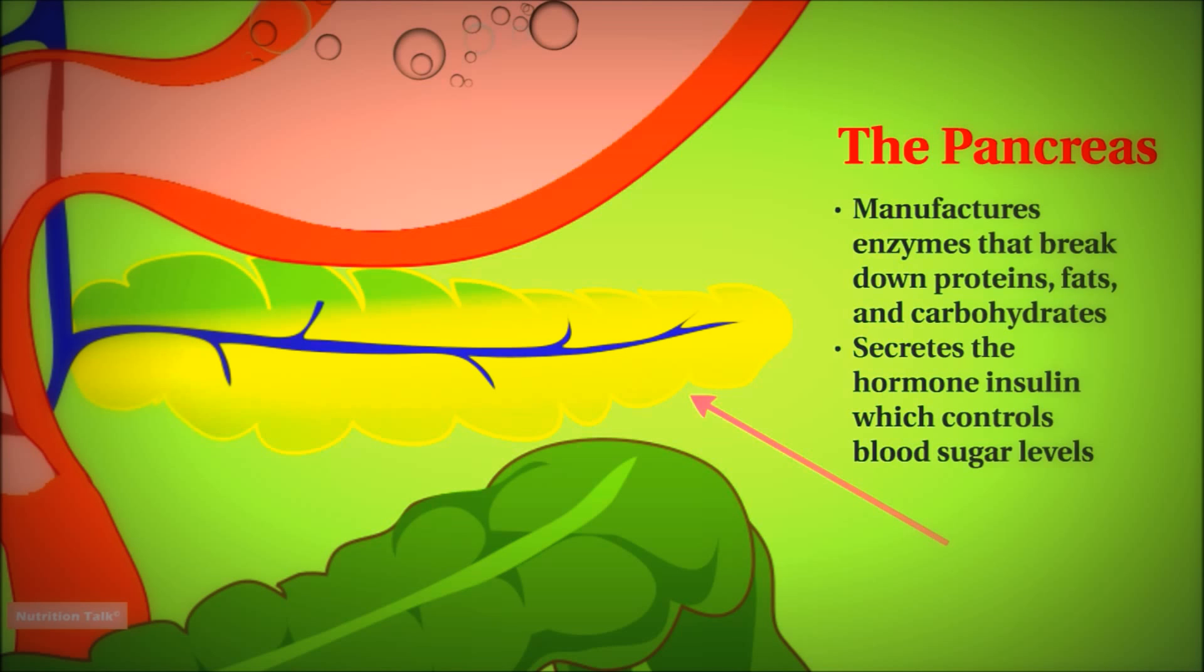In addition to making these enzymes, the pancreas has another very important function, and that is the production of a hormone called insulin. And insulin we will discuss further in future lessons because it's a very important hormone that controls blood sugar levels in our body.